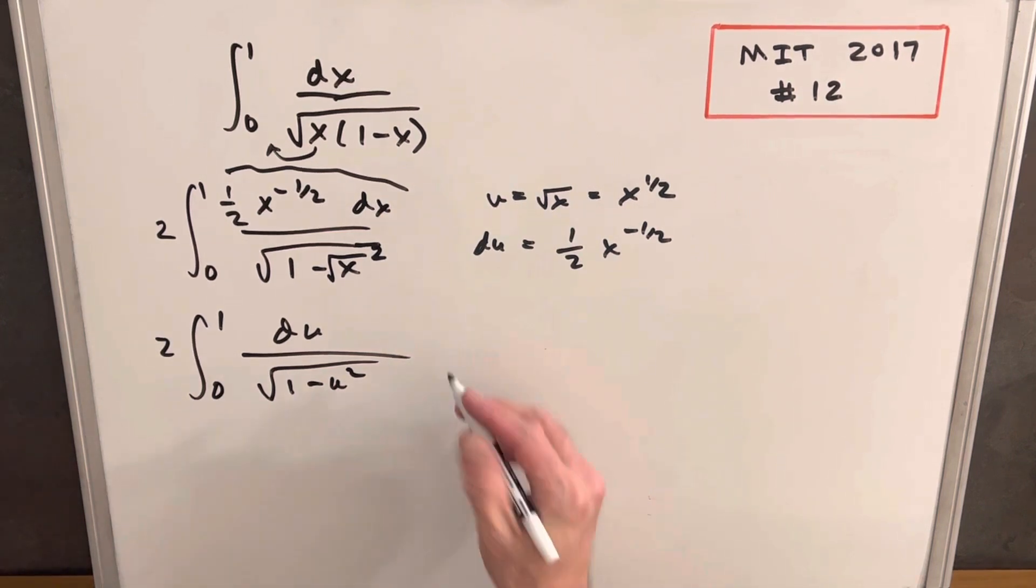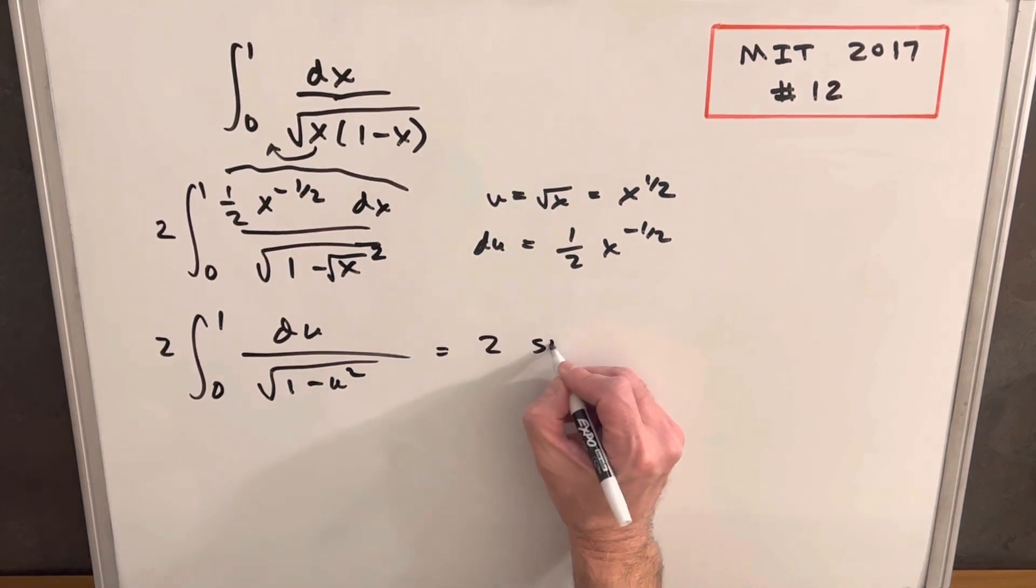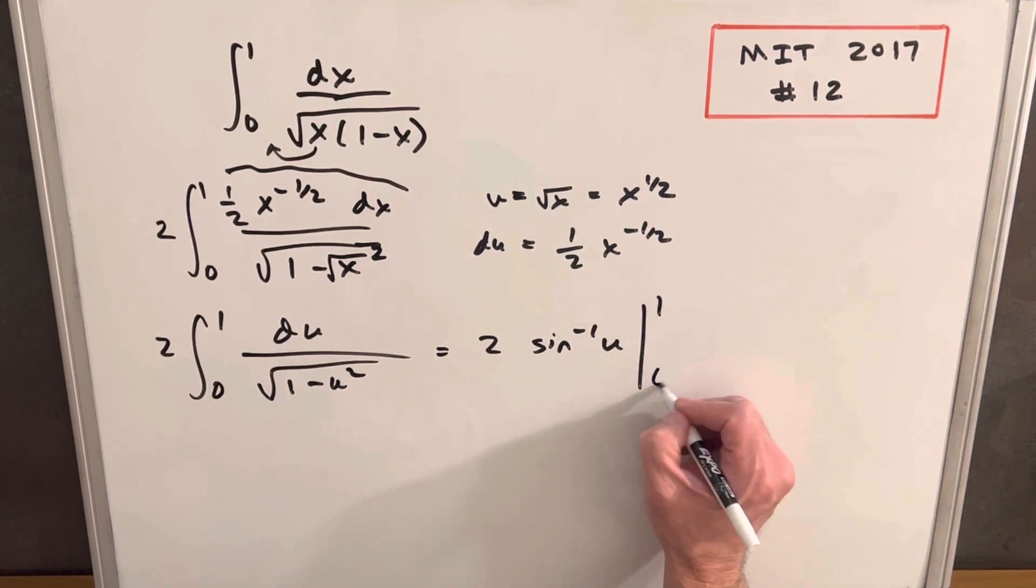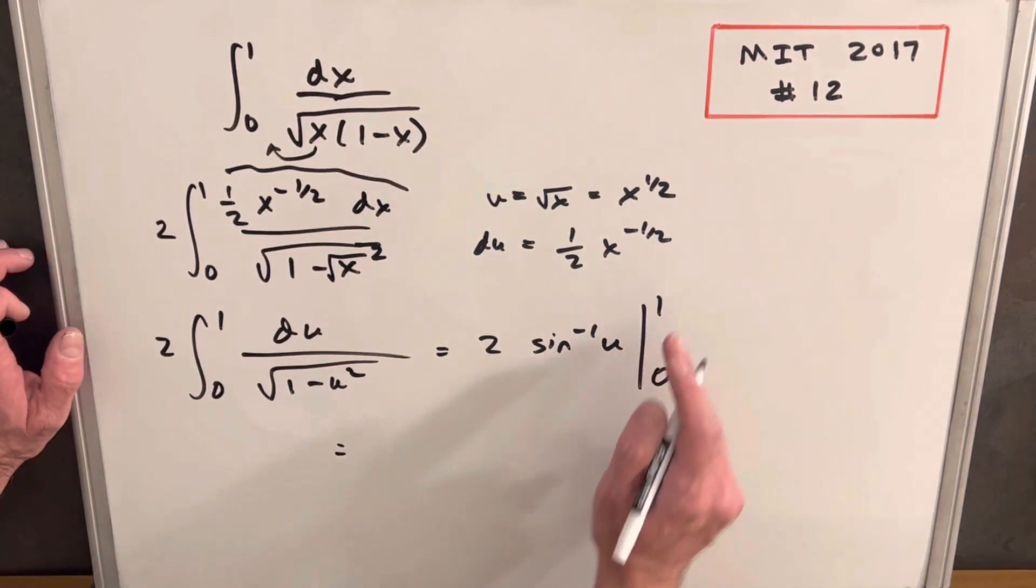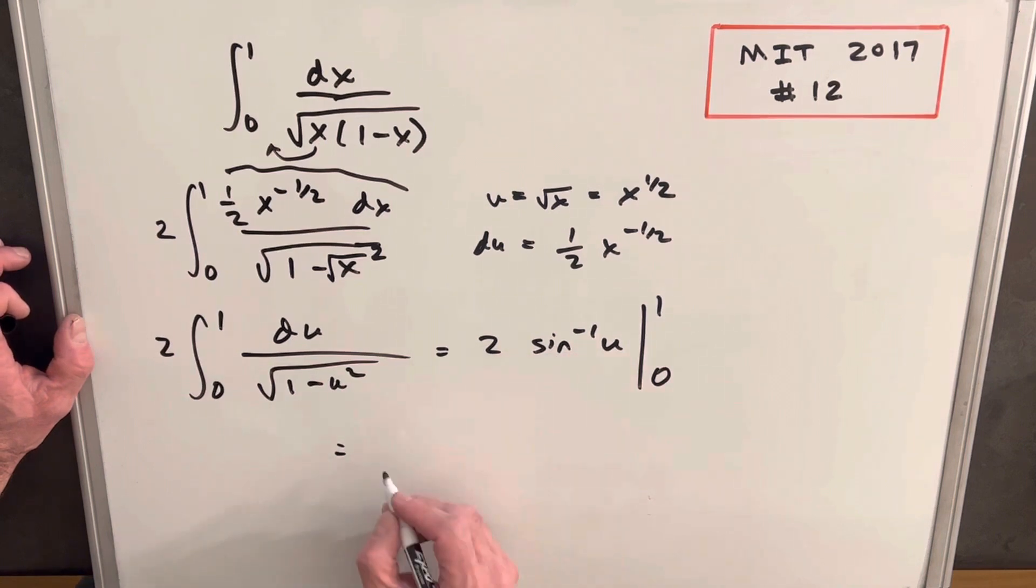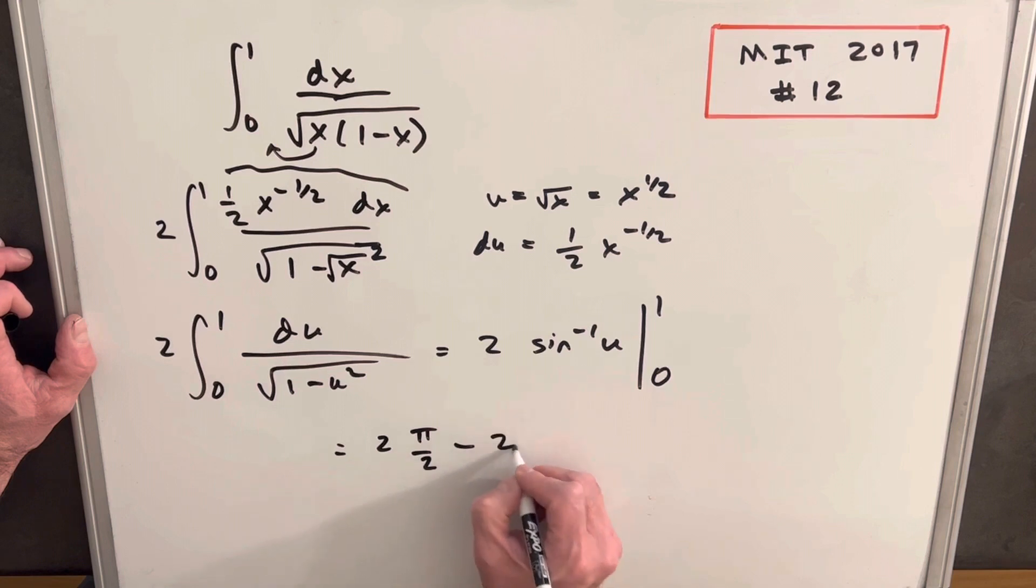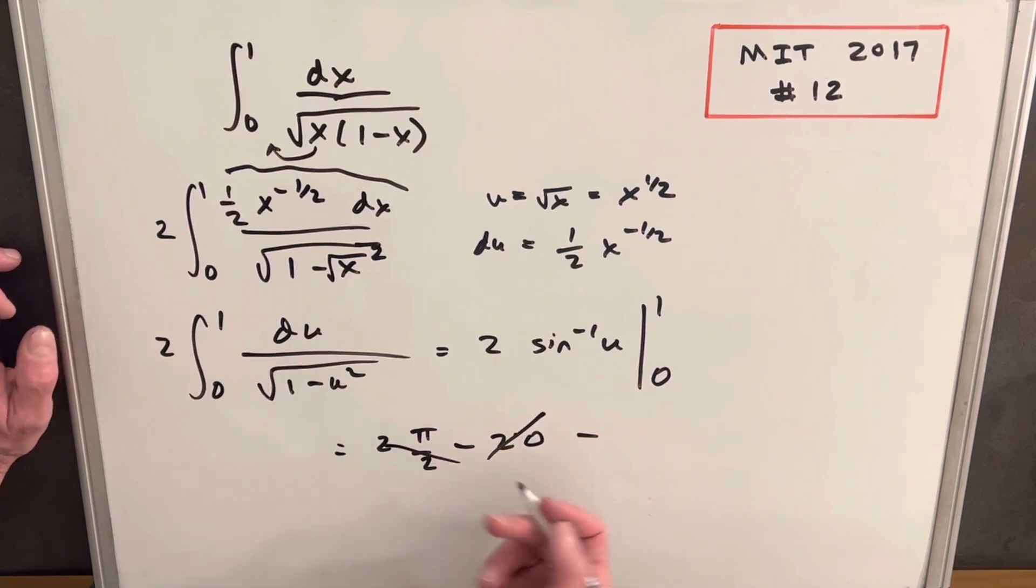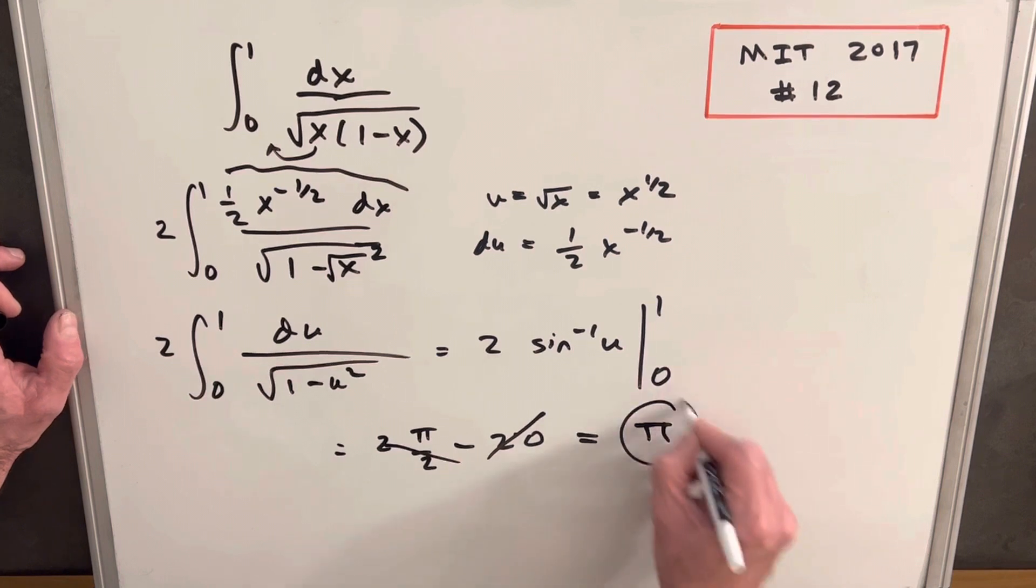That's perfect because this integral is arc sine or inverse sine of u, and we evaluate it from 1 to 0. Evaluating at 1, sine inverse of 1 is π/2, so we have 2 times π/2 minus 2, and the sine inverse at 0 is 0. So this piece becomes 0, and we're left with 2 times π/2, which is our final answer: π.